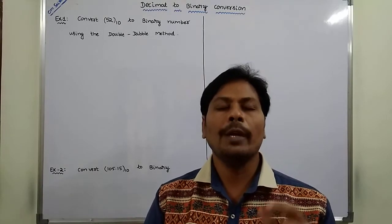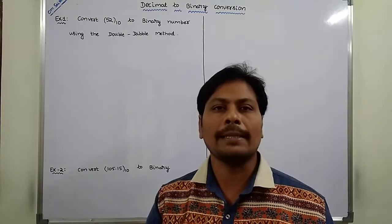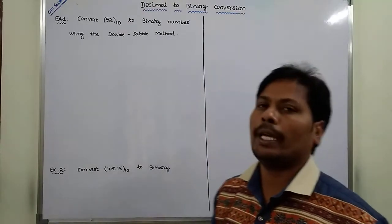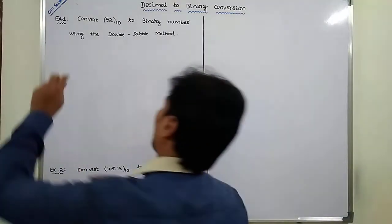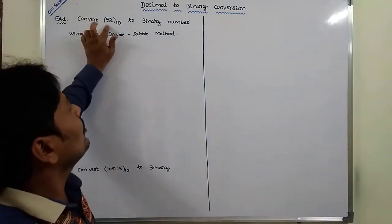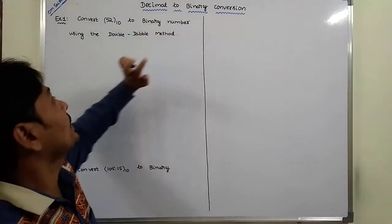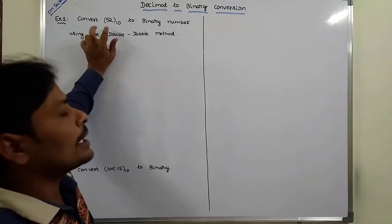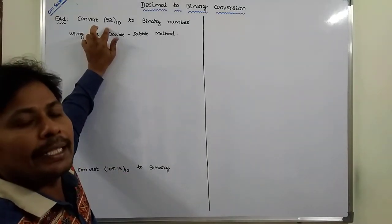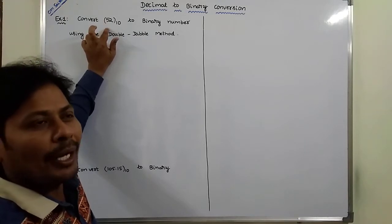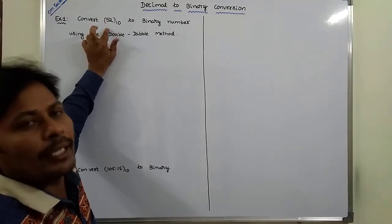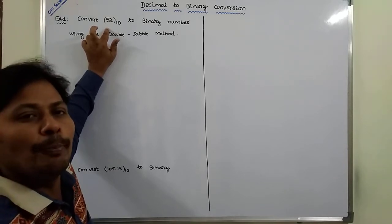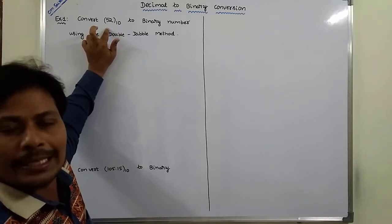In this video, we have to solve some example problems on decimal to binary conversion. Now we go for the first example: convert 52 base 10 to its binary equivalent number. To convert this decimal integer number into an equivalent binary integer number, we have to use the successive division by two method until the quotient is 0.